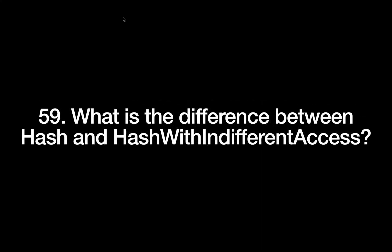What is the difference between Hash and HashWithIndifferentAccess? Hash is used in both Ruby and Rails, and it only accesses keys defined in the specific format — if you define a string key, it's treated as a string; if you define a symbol key, it's treated as a symbol. With HashWithIndifferentAccess, you can use either string or symbol format and it will work. Try this at your end for a clearer difference.